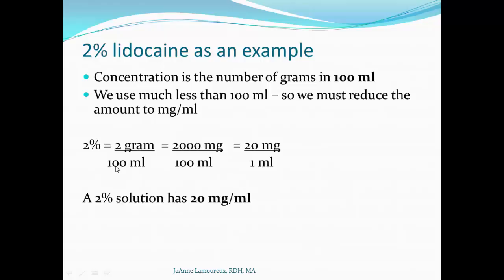Since 1 gram equals 1,000 milligrams, 2 grams equals 2,000 milligrams. When you cancel the matching zeros from 2,000 milligrams per 100 mL, you get 20 milligrams per 1 mL. Bottom line: a 2% solution, which started out as 2 grams in 100 mL, boils down to 20 milligrams in each milliliter you deliver.